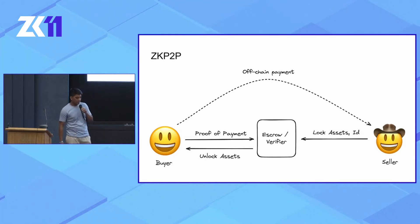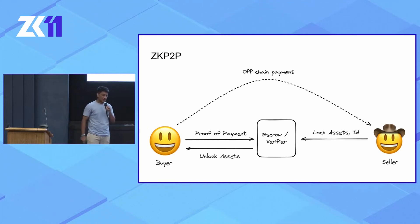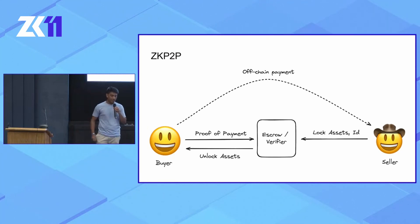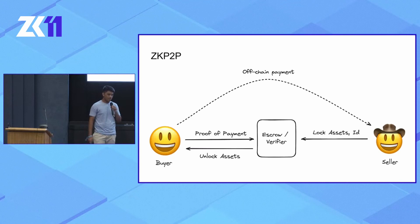It has a rather simple construction. The seller locks their assets in the escrow contract and also provides an option identifier. The buyer then sends a payment to that identifier, generates a proof of payment, and sends that to the verify contract. If the proof verifies, the verify contract unlocks the assets to the buyer.